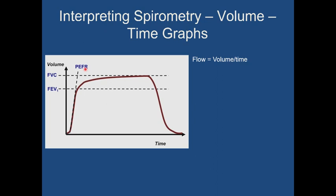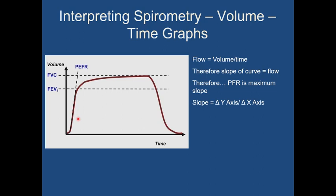You'll see all different versions of acronyms for peak expiratory flow: PEFR, PEF, PF. The slope of the curve is flow — volume over time — so peak expiratory flow is the maximum slope of the volume-time curve. To calculate slope, you take the change in the y-axis over the change in the x-axis at any given point, which gives you the flow. Alternatively, you find the angle at that point and the tangent of the angle gives you the peak flow.